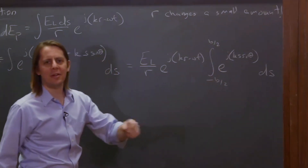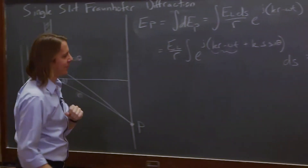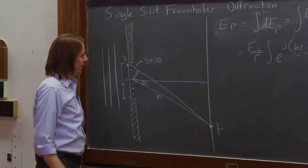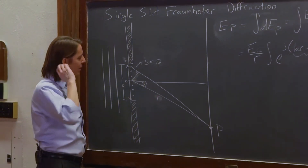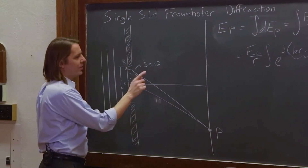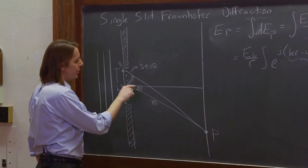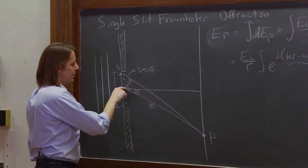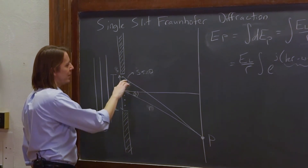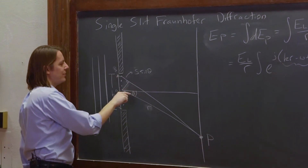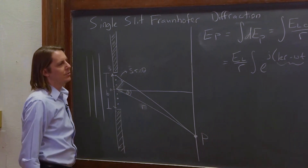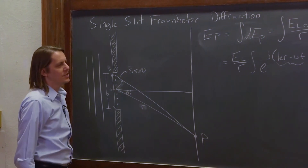We're going to take this integral with respect to S. You might be worried about theta — if you're observant, you'd say theta changes as you move around. It actually doesn't. The way we defined it, just like R, theta is the angle of this ray from the center point. As we move up and down, we're talking about differences, and they're all based on that same angle theta. So you don't have to worry about theta changing; it doesn't change very much at all.